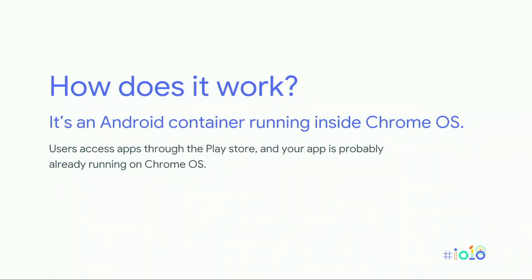So why does this matter to you, Android developers? The headline here is: Android apps work on Chrome OS. It works by the Android framework running inside a container that sits on top of the base of Chrome OS. The full Play Store is already available, so your app is probably already running on Chrome OS. Ultimately, what we care about is a good user experience — part of that is the OS itself, and part of that is the apps users choose to run. We've been investing heavily in improving the product.